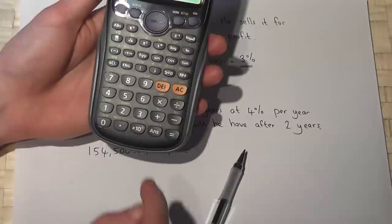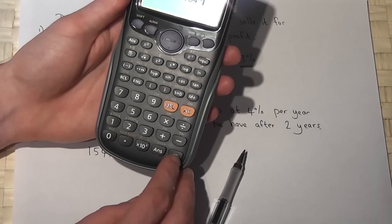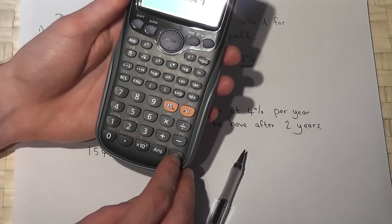Right then, so he invests £154,500, and the interest rate is 1.04, i.e. 4%, and this is squared. So if I press enter, he has £167,107.20. So that's the amount that Derek will have after two years.